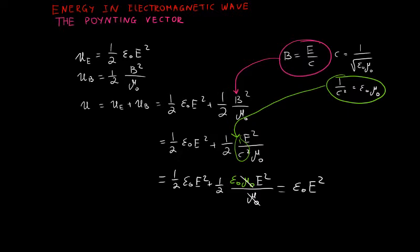So the total energy density stored in the electromagnetic field equals ε₀E². We can also substitute the relationship between electric and magnetic fields to write it as ε₀c²B² or B² over μ₀.